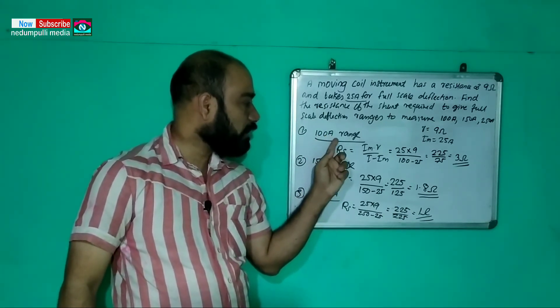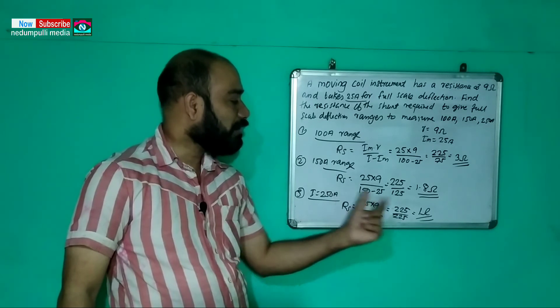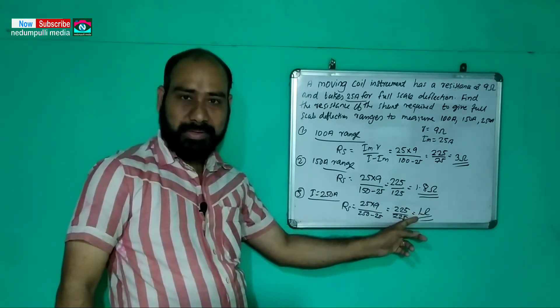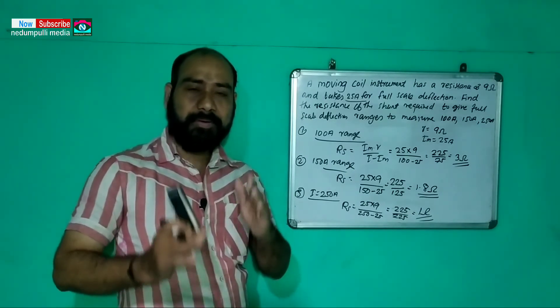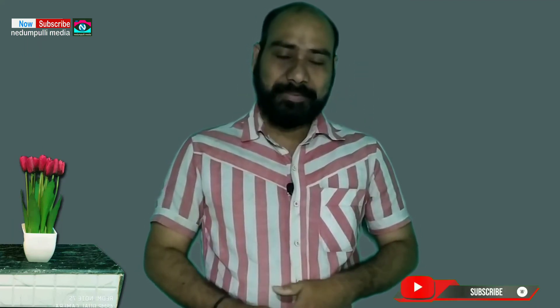We found the values of the shunt resistance for all three ranges. We have solved both problems and covered the full method. You will be able to do similar problems from your book. We will study the next chapter in the next class. That's all. Bye.